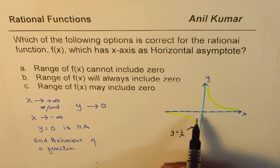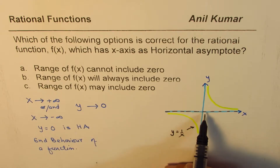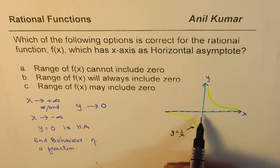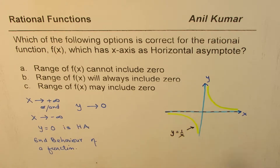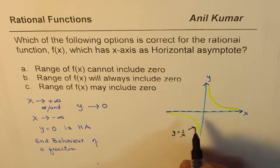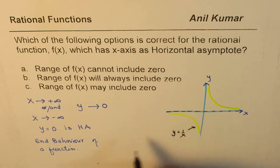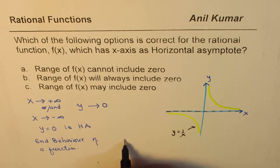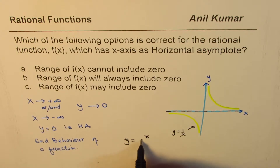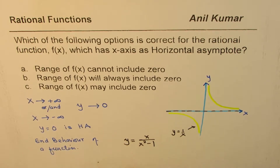So for y equals 1 over x, y equals zero is not included in the range. But the question is: is it always the case? I'd like you to consider some other functions. We could give an example — let's say y equals x over x squared minus 1.